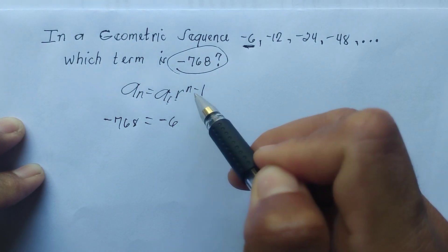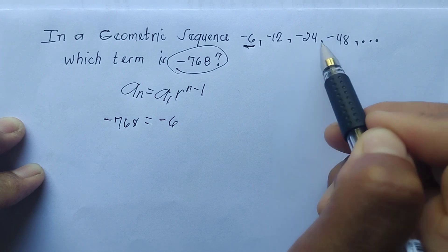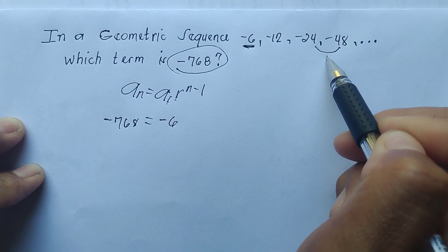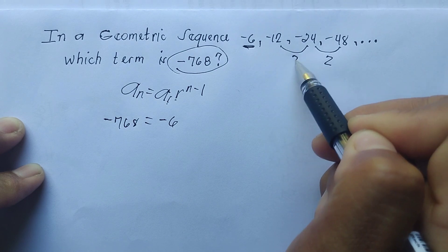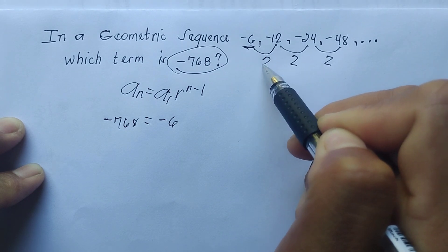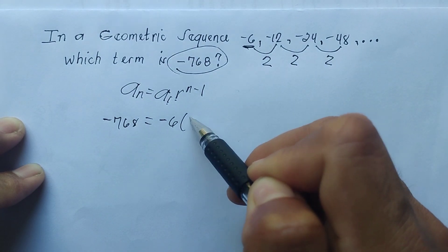To get the common ratio, we need to divide the sequence backward. If you divide that you get positive 2. You need to verify: divide by positive 2, divide by positive 2. So our common ratio is positive 2.